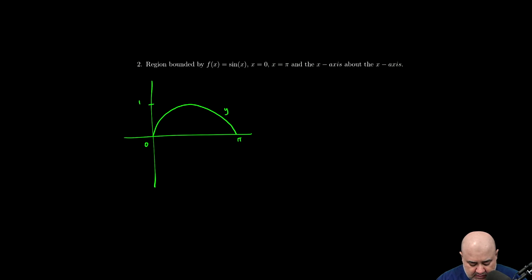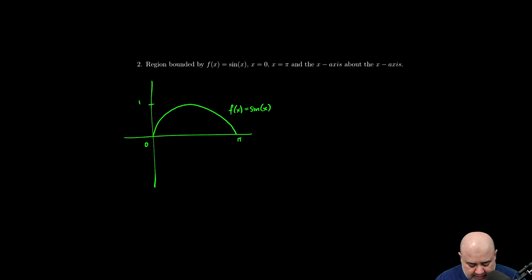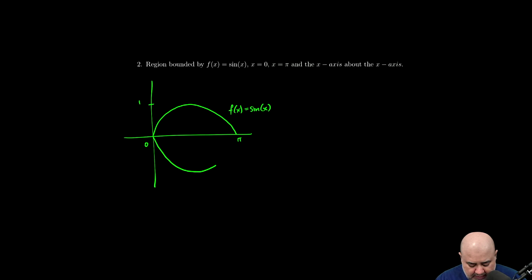And this is zero, this is pi. I know this is one because this is f of x equals sine x. I've labeled my function, I've labeled the x-axis, the y-axis, and the first thing I'm going to do is draw a reflection of it about my axis of rotation.